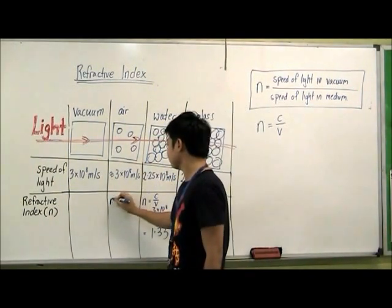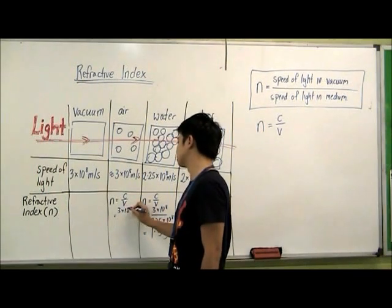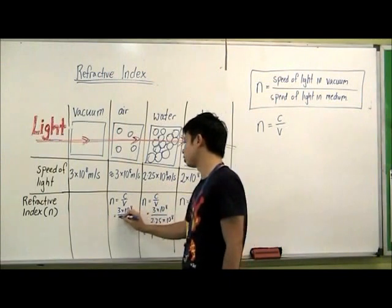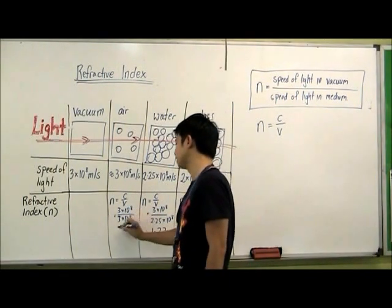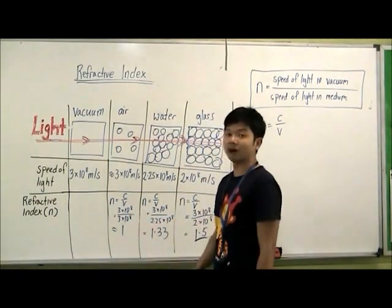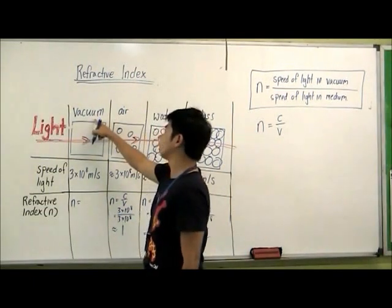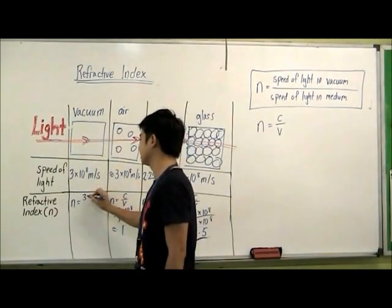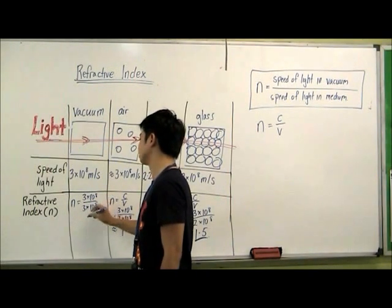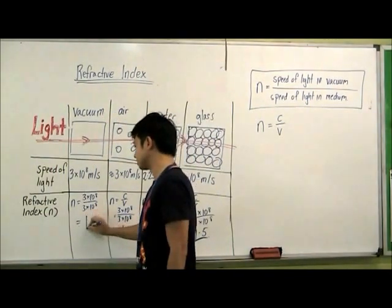For air, the speed of light in vacuum is 3 times 10 to the power of 8 divided by the speed of light in air which is also 3 times 10 to the power of 8. So in this case, the refractive index is 1. And for the refractive index of vacuum, we are comparing the speed of light in vacuum with the speed of light in vacuum, so the ratio will also give us 1.